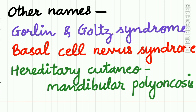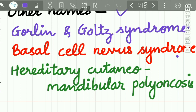Jaw cyst basal cell nevus bifid rib syndrome is also known by other names: Gorlin-Goltz syndrome, basal cell nevus syndrome, and hereditary cutaneo-mandibular polyoncosis.